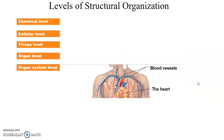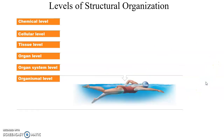The organ system level consists of various organs working together to perform certain functions in the body. For instance, the heart, the blood vessels, and the blood within them are the structures that make up the cardiovascular system. Finally, the organism level is all of the organ systems put together to make a person.